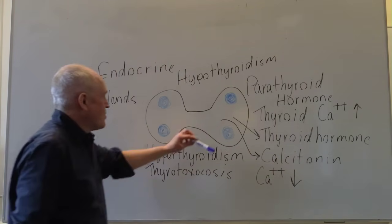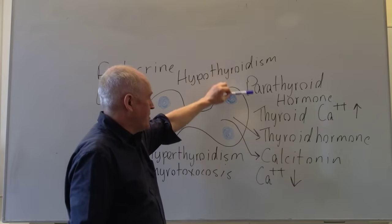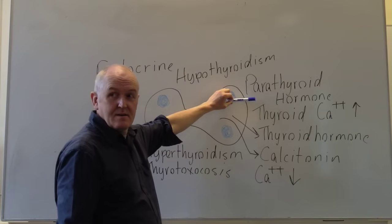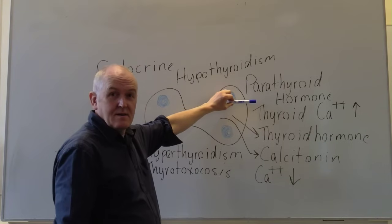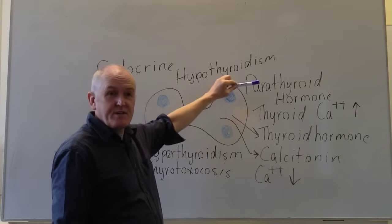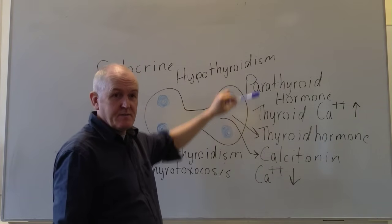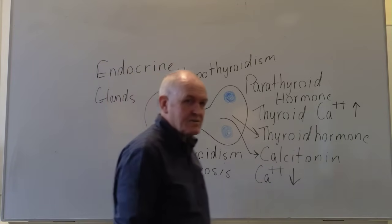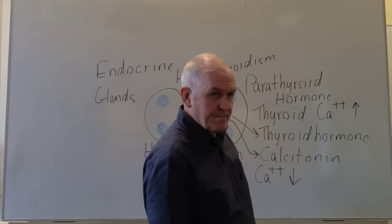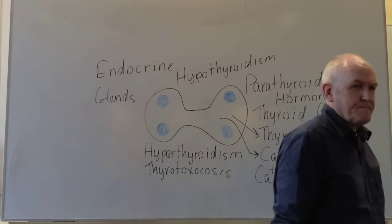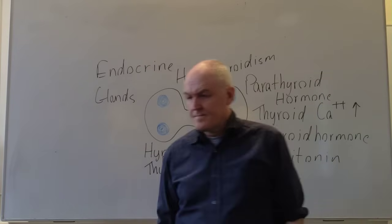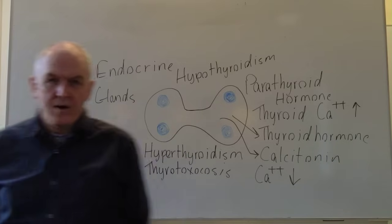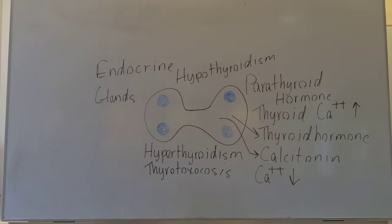For example, if someone was producing too much parathyroid hormone — the function of which is to increase calcium in the blood — that could cause hypercalcemia, which we don't want. Abnormalities in the amount of any of these hormones will lead to endocrine disorders.